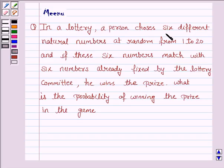a person chooses six different natural numbers at random from 1 to 20. And if these six numbers match with the six numbers already fixed by the lottery committee, he wins the prize.